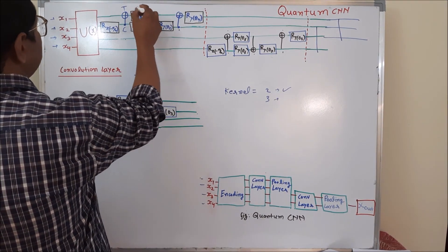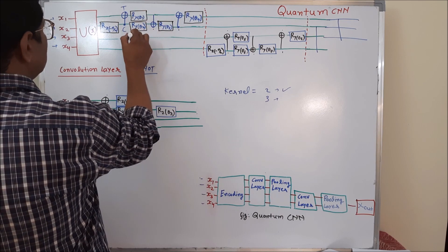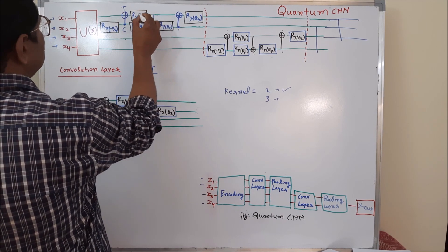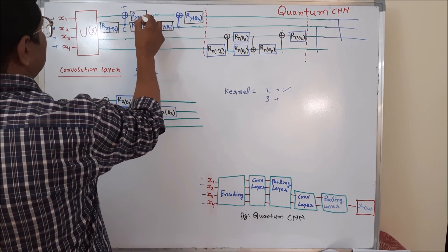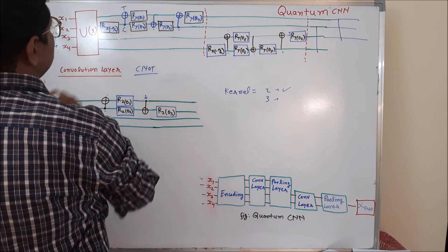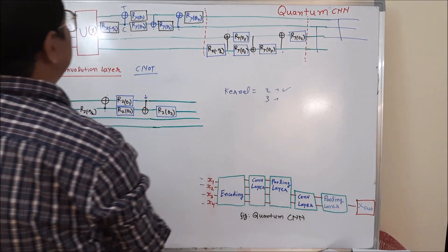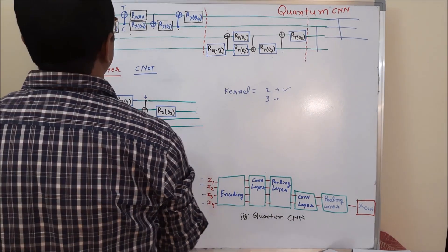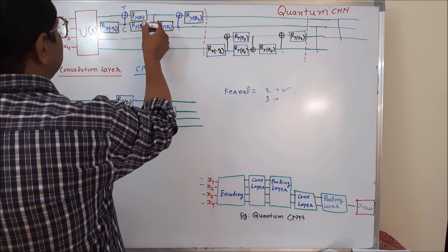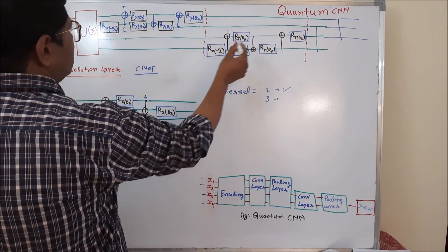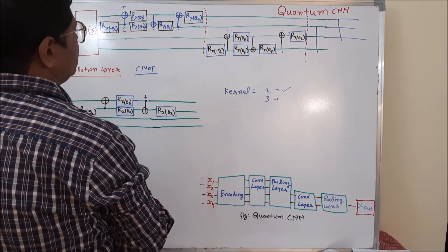Once you get the output, we again rotate both outputs through some angles in the y direction — theta1 angle, theta2 — or we can say theta1 parameter or theta2 parameter. Here, theta1, theta2, theta3, theta4 — all those thetas are actually the learnable parameters.